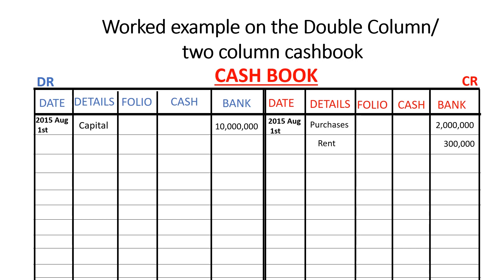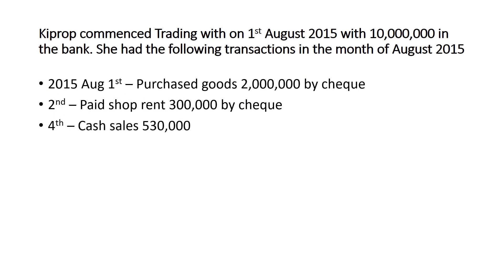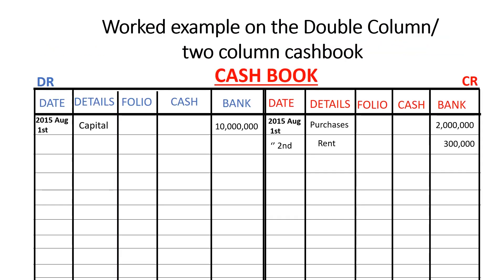On 4th August, there were cash sales of Uganda shillings 530,000. Cash sales mean more cash is coming into the business, so cash increases. When cash increases, we debit. So the 530,000 figure is put in the cash column on the debit side. The other item affected is sales.